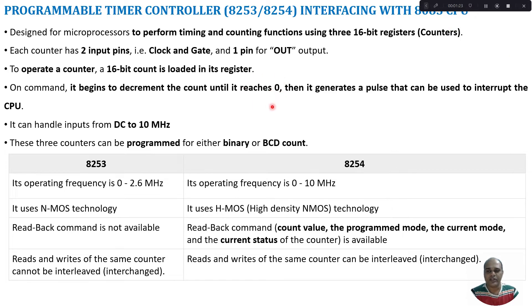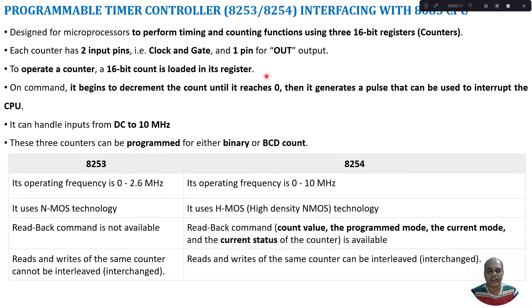When the count reaches 0, it will generate a pulse that can be used to interrupt the signal. We put a value into the counter and then start decrementing this value depending upon the clock signal given to it. The frequency of the clock determines the speed of down counting and the gate signal will be used as an enable signal. Whenever the gate signal is present, the down counting will be performed. Once the count reaches 0, the module will generate an interrupt.